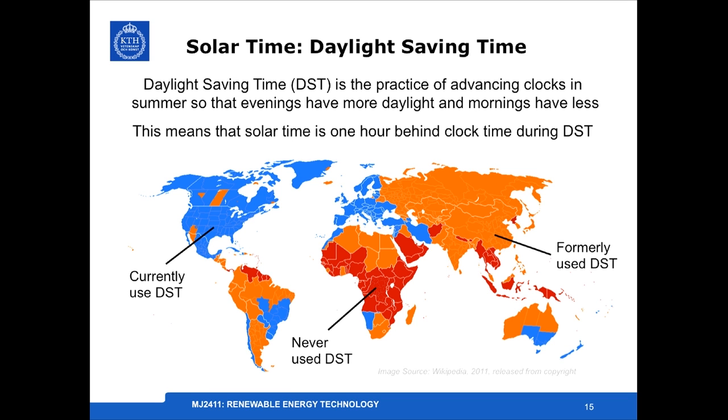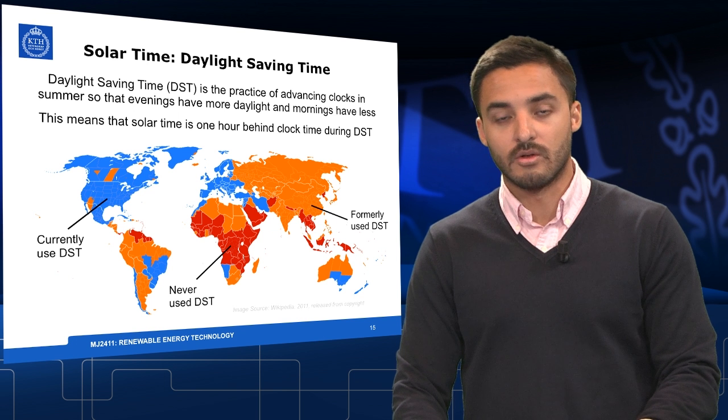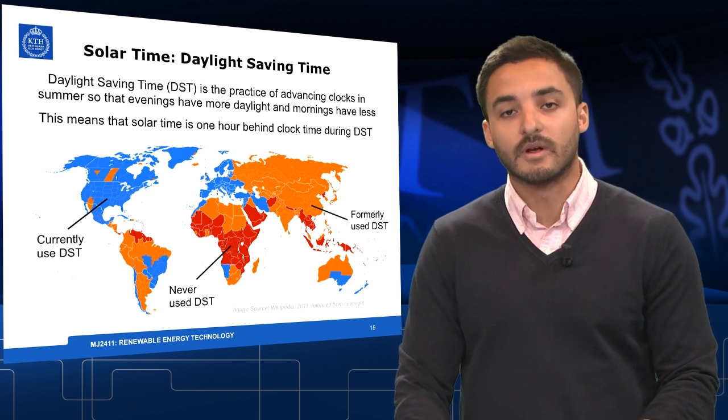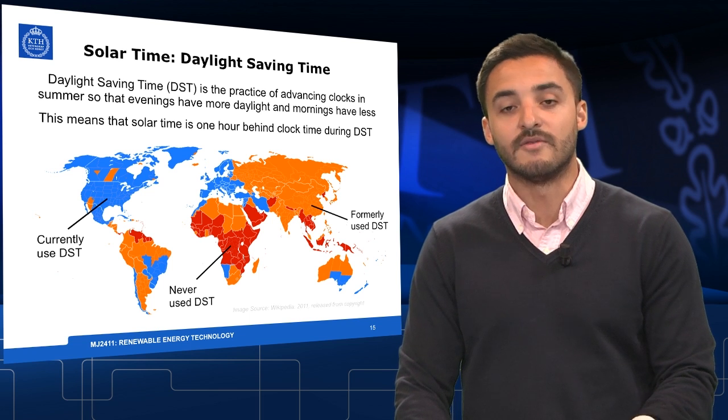The last correction factor to take into account is the daylight saving time. Daylight saving time is the practice that during summer we advance clocks so that evenings have more daylight and mornings have less. This means that solar time is one hour behind the clock during daylight saving time. This is not used throughout all the world, but it's important to know if you're performing calculations whether it's summer and if this is applicable.